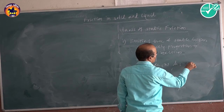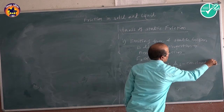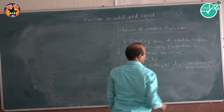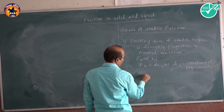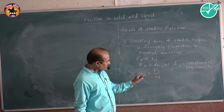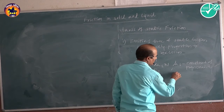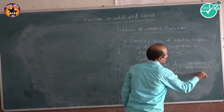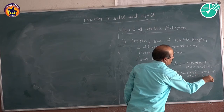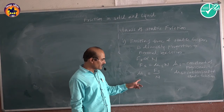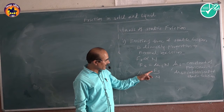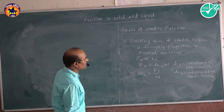We know that μs is the constant of proportionality, and this μs can be written as μs = Fs ÷ N. So, μs is known as the coefficient of static friction. We can define the coefficient of static friction as the ratio of the force of static friction to the normal reaction, which is called the coefficient of static friction.